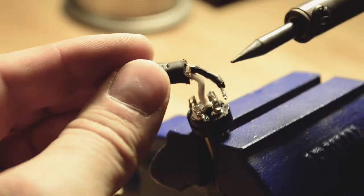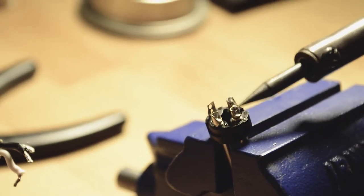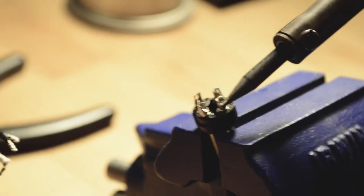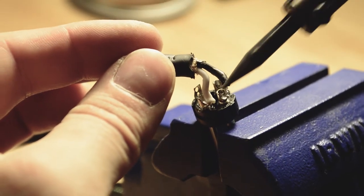Before you move on, you want to make sure you remember where the wires went. On these XLR jacks, it's always 1, 2, 3. So in this case, it's going to be ground, white, black.